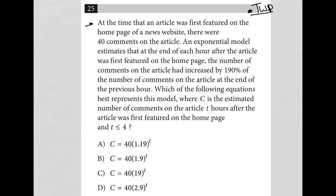The first sentence says at the time that an article was first featured on the homepage of a news website, there were 40 comments on the article. So time at first featured. I'm going to glance down at my answer choices. I see that I have T exponents in each position. As a point of strategy, whenever I have a question like this, I'm always looking to figure out what does it mean for that exponent to be zero? So what does T equals zero?